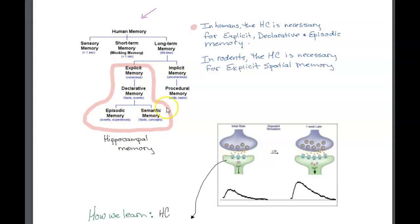In rodents, which a lot of times we're looking at models of rodents, this is particularly important for spatial memory. Because for them, knowing where they are in space, their position at any given moment, is really important. So this is hippocampal memory.